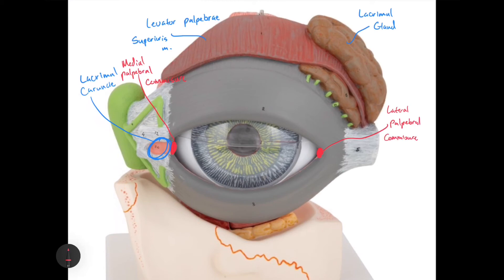The lacrimal apparatus encompasses all the lacrimal organs. The lacrimal gland secretes lacrimal fluid, which courses down to the eyeball to keep it lubricated. Every time you blink, you spread that lacrimal fluid over the front of your eye. In an eye-staring contest, your eyes dry out because you're not blinking and spreading that fluid.